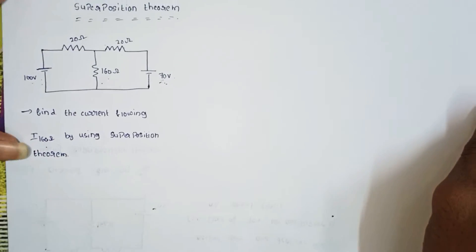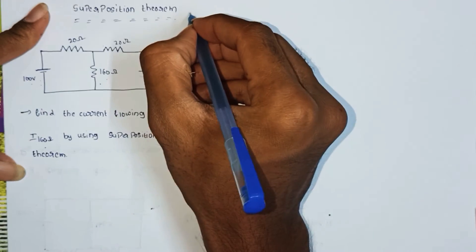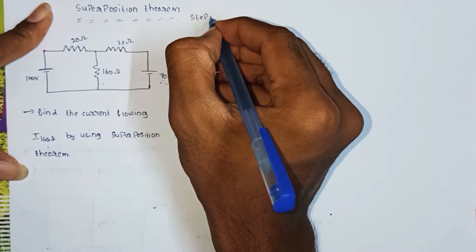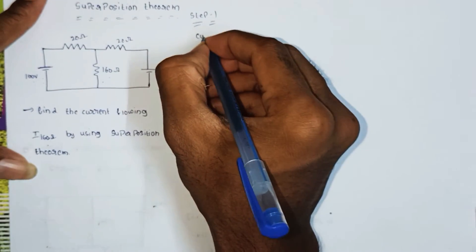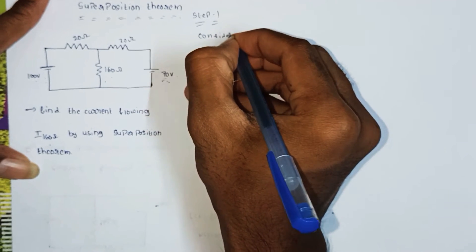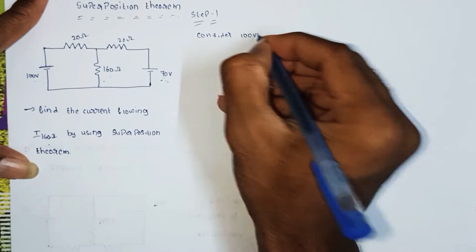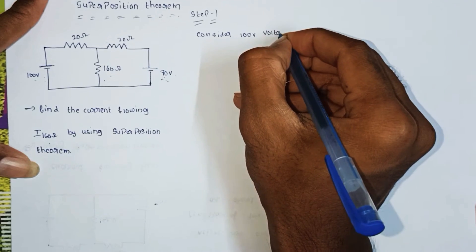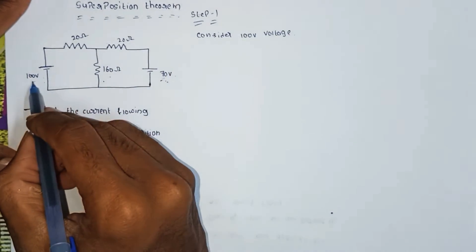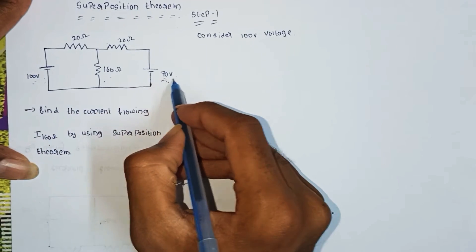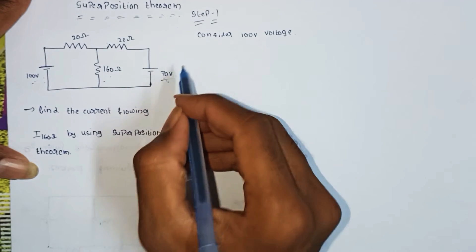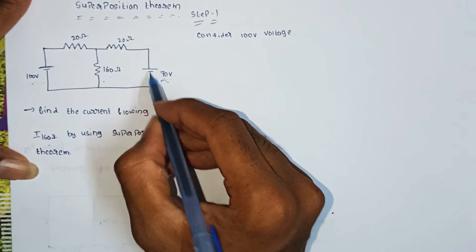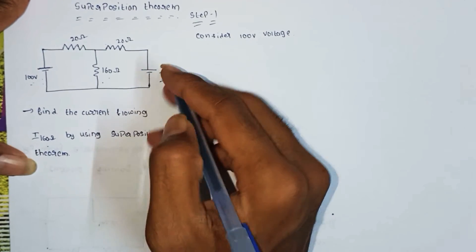So step one: consider the 100 volts voltage source. Here we activate 100 volts and deactivate 70 volts. Since 70 volts is a voltage source, when we deactivate it we replace it as a short circuit.